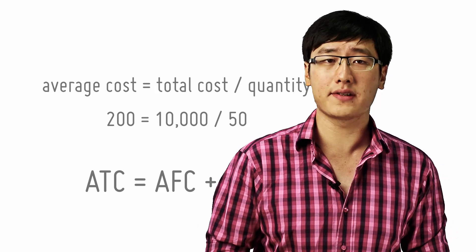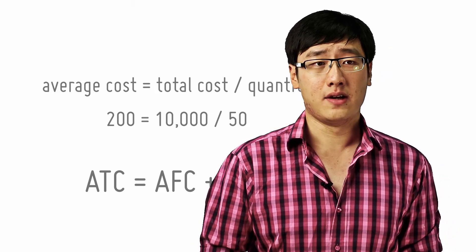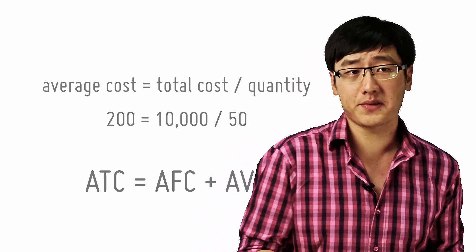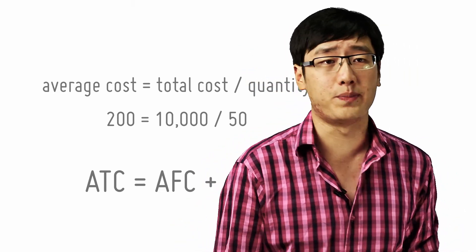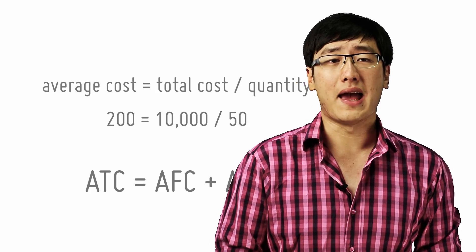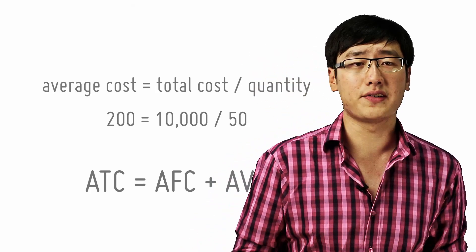Average cost is the cost per unit of production. So it is defined as total cost over quantity. Hence, if it costs a firm $10,000 to produce 50 units of goods, then the average cost is $200.